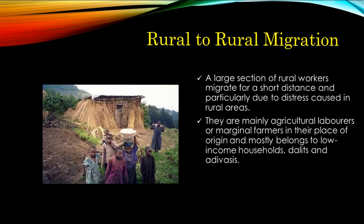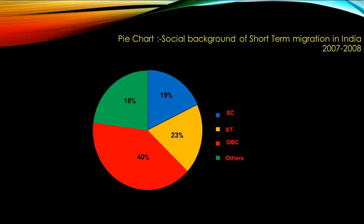This pie chart shows the social background of short-term migrants in India in 2007–08. It shows that 19% were SC, 23% ST, 40% OBCs, and 18% others among those who migrated in 2007–08.